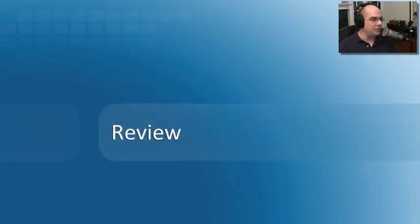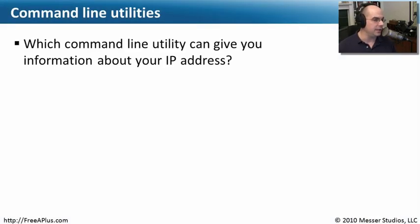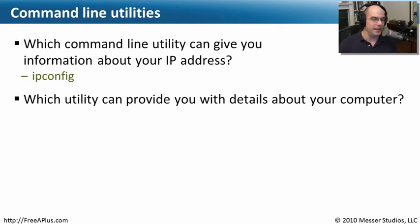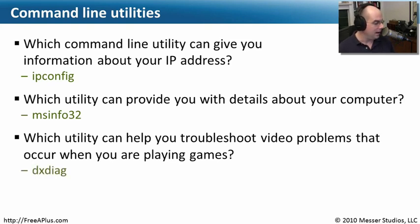Those are just a few of the command line options available to you. We'll be learning a lot more about command line options and other programs as we go through all of these CompTIA A+ video modules. Let's review what we've learned today. Which command line utility can give you information about your IP address? That was IPconfig. Which utility can provide you with the details about your computer? The MSinfo32 utility is perfect for that. And which utility can help you troubleshoot video problems that occur when you're playing games? The audio and video diagnostics can be run for DirectX directly from the DXDiag prompt at Start, Run.